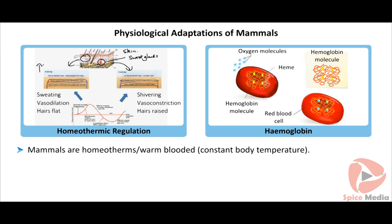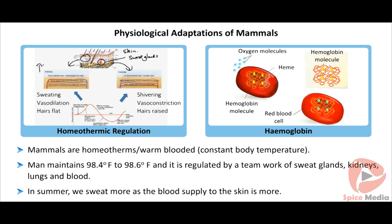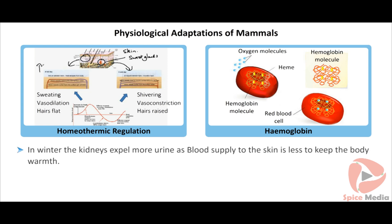Mammals maintain a constant body temperature and are called homeotherms or warm-blooded animals. Man maintains 98.4 to 98.6 degrees Fahrenheit, regulated by a team work of sweat glands, kidneys, lungs and blood. In summer, we sweat more as blood supply to the sweat gland increases and the kidney expels less urine. In winter, blood supply to the skin is less to lower heat lost, so the kidneys are triggered to expel more urine.